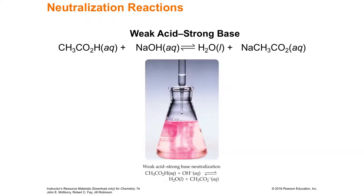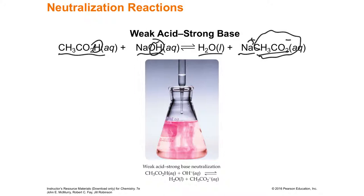Here's an example of a weak acid and a strong base. You have some vinegar — acetic acid. The strong base is sodium hydroxide. The hydrogen comes off with the hydroxide and becomes water. You're going to end up with a little bit of sodium ion and a little bit of acetate ion. The acetate is a weak base, so it's going to raise the pH, and your pH is going to be above 7.